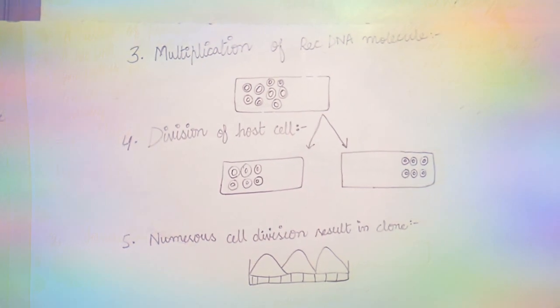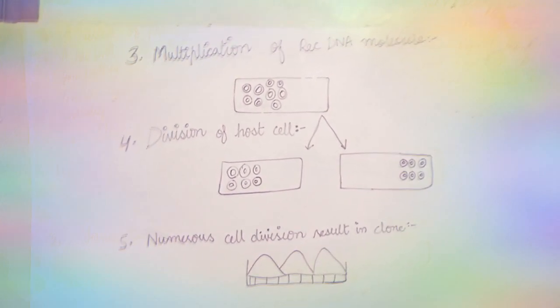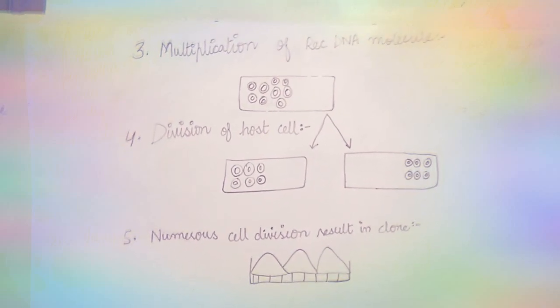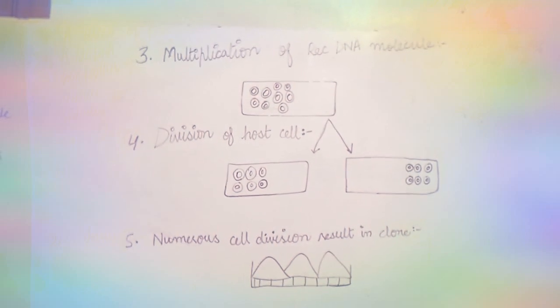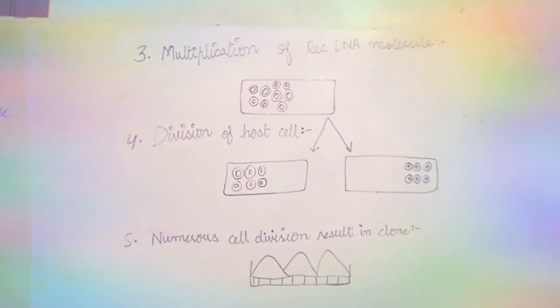The third step is multiplication of the recombinant DNA molecule. Here, multiplication occurs in the host cell. We use yeast here, mostly bacteria for example E. coli, as well as fungi can also be used.